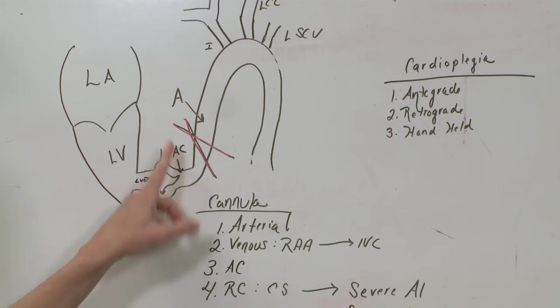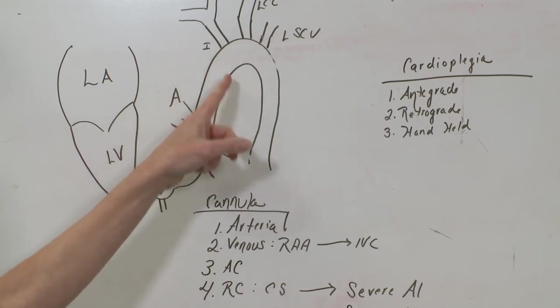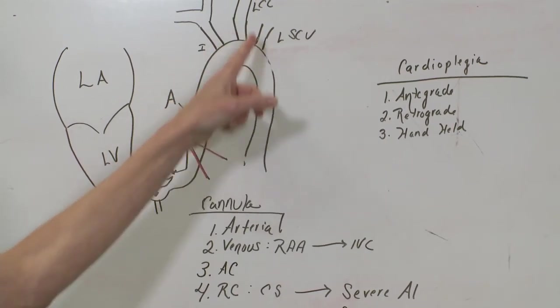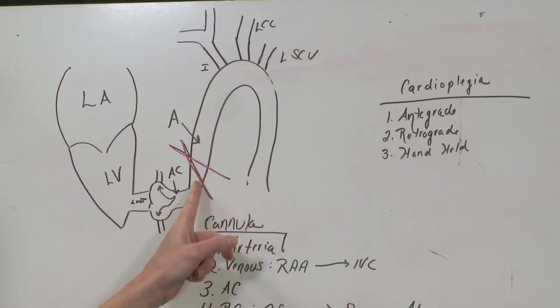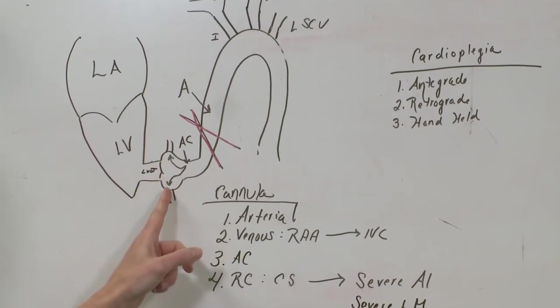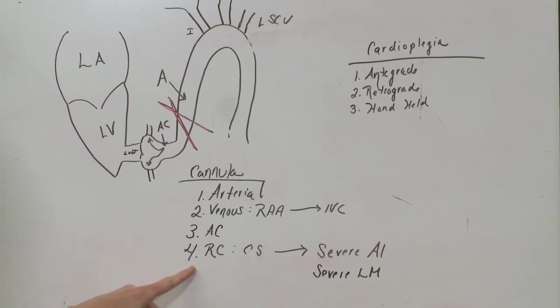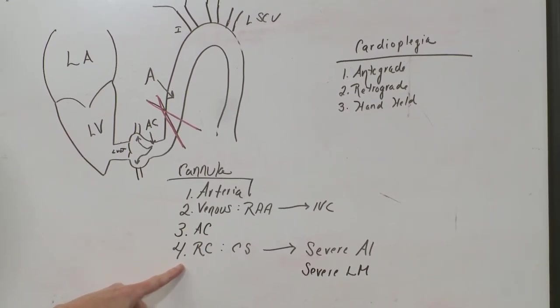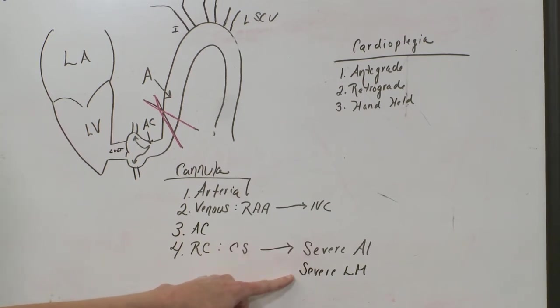Once you go on bypass, this is where your cross clamp goes so that your arterial cannulation can run blood flow up to the head, up to the upper extremities, and down towards the body. And that cross clamp stops blood flow there. And then your antegrade cardioplegia goes down the coronaries. And then fourth, we discussed when you would want to place a retrograde. The retrograde cardioplegia cannula will go into the coronary sinus. And then the indications for that are severe aortic regurgitation and severe left main disease.